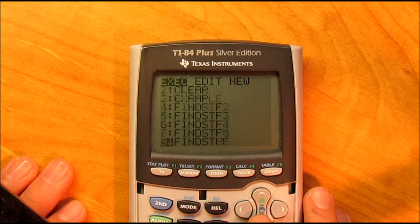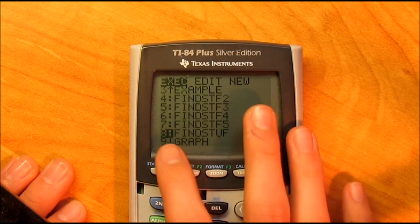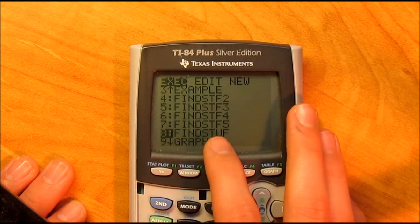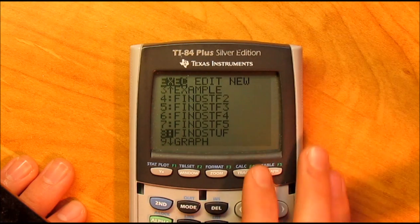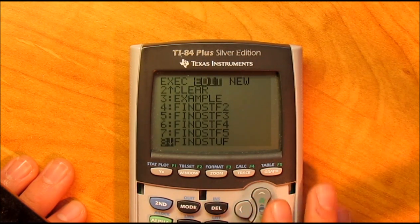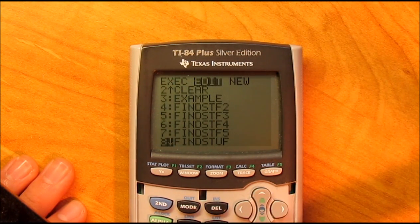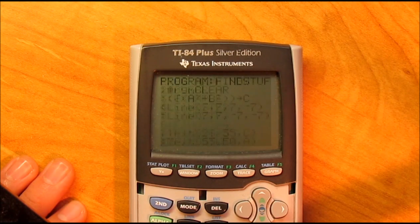First thing you need to do is start a new program and name it F-I-N-D-S-T-U-F. Find Stuff, spelled without the second F. So, go ahead and do that.